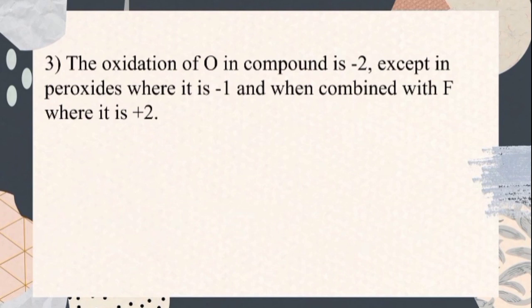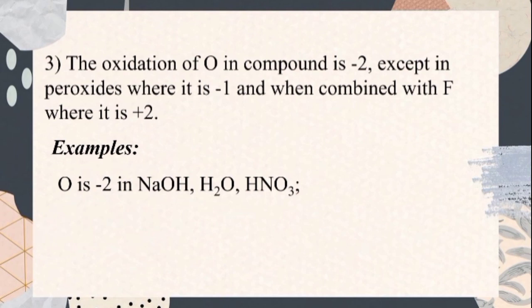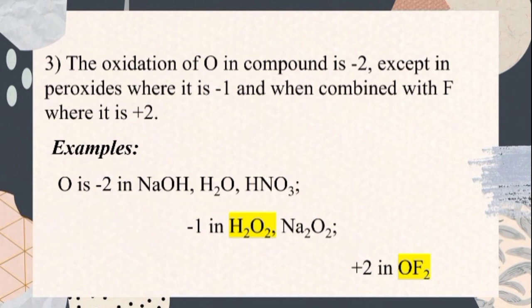Rule number three: the oxidation state of oxygen in a compound is negative two, except in peroxides where it is negative one, and when combined with fluorine where it is positive two. For example, oxygen is negative two in sodium hydroxide, negative two in water, and negative two in nitric acid. Oxygen is negative one in hydrogen peroxide and also negative one in sodium peroxide, while it is positive two in oxygen difluoride.